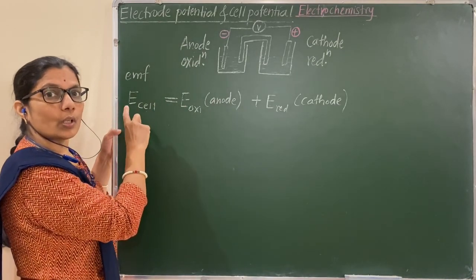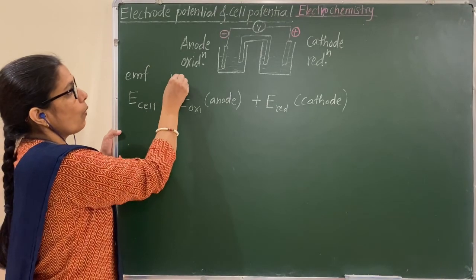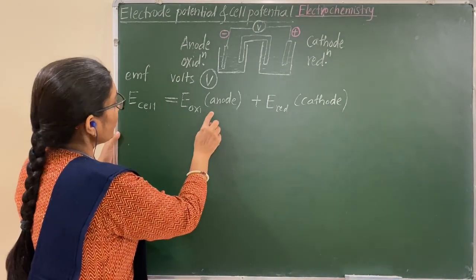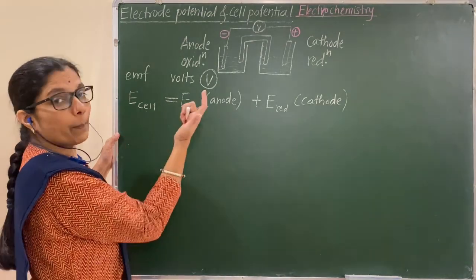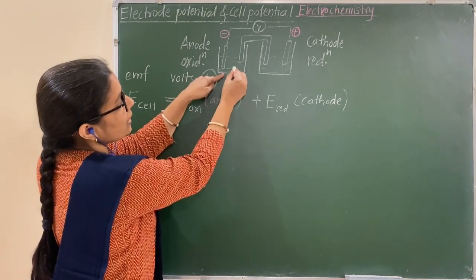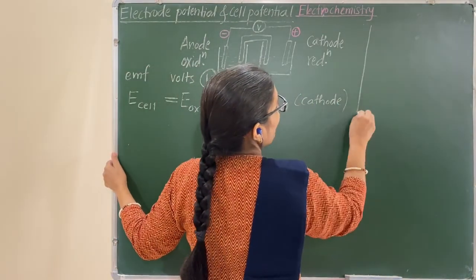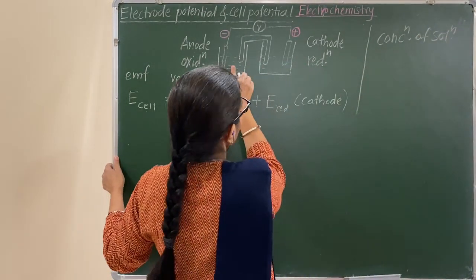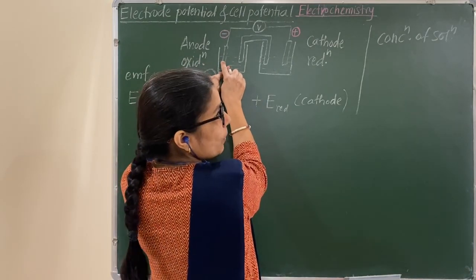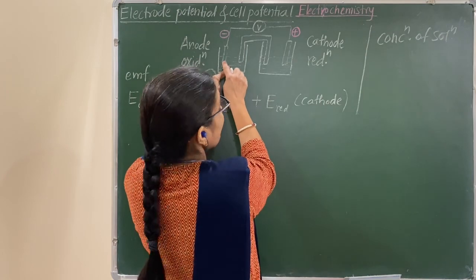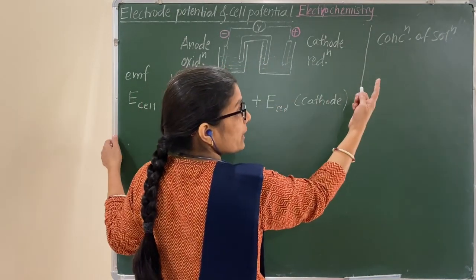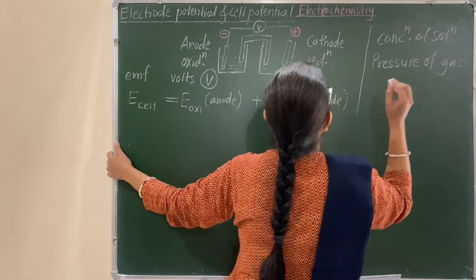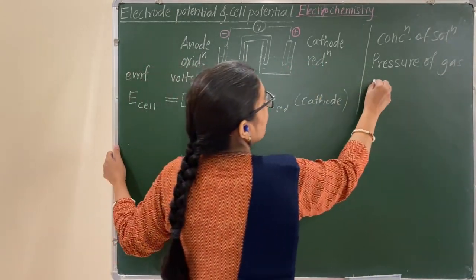The electrode potential or the cell potential is measured in volts. The electrode potential and cell potential depend on the concentration of the solution. It also depends on the nature of the electrode — if the electrode is a gas electrode, then it depends on the pressure of the gas and the temperature.